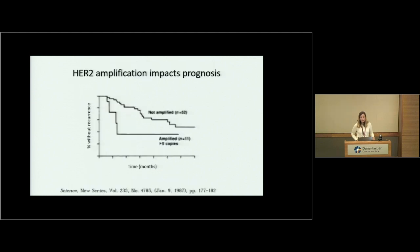HER2 amplification data published in 1987 showed that patients with HER2-amplified breast cancer got much sicker faster from their breast cancer compared to those without amplification. Because of this information and the identification of that HER2 protein, it drove breast cancer researchers to work hard to figure out how they could better treat HER2-positive breast cancer.